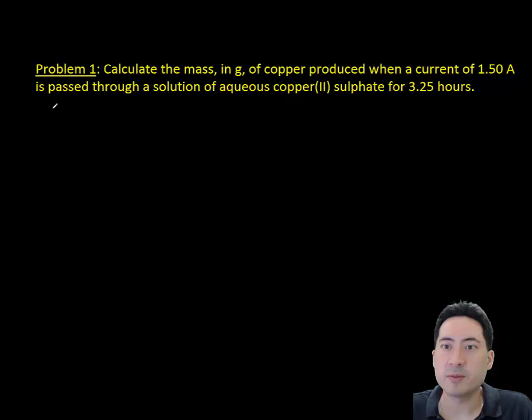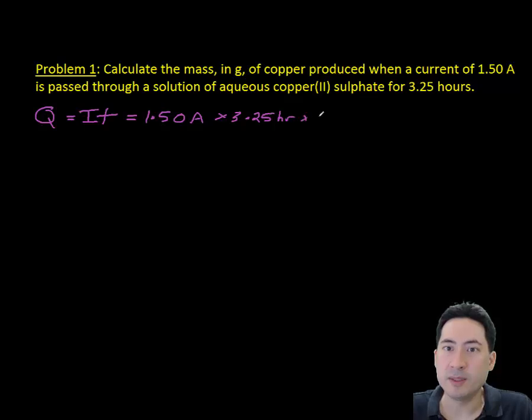So the final problem here. Calculate the mass in grams of copper produced when a current of 1.5 amps is passed through a solution for 3.25 hours. So Q equals IT. You need to remember that. That is from IGCSE if you've done that award. So Q equals IT. The current is simply taken from the equation. It's 1.5 amps. The problem is that's per second. And you've been given 3.25 hours. So converting it to seconds, it's 60 minutes in an hour, there's 60 seconds, 60 minutes in an hour, 60 seconds in a minute. So you need to times it by those two values to convert it. And that will give you 17,550 coulombs.